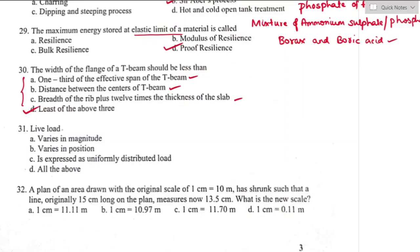Question number thirty-one: live load is — live load is a temporary load in the form of movement, such as vehicles moving on a bridge. It varies in magnitude and position, and is expressed as uniformly distributed load. All options are correct. Option D is the right answer.